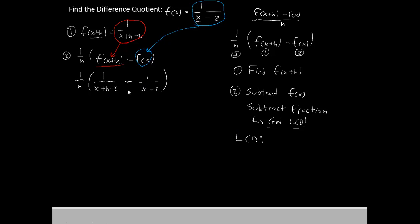So let's try to find what the LCD is supposed to be. Well, we have two fractions in here that need to be subtracted. One of them has a denominator of x plus h minus 2. That's going to have to be included in our LCD. The other one has x minus 2. That's also got to be included.